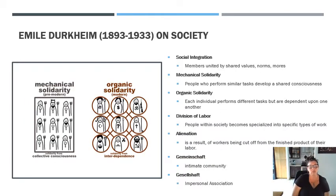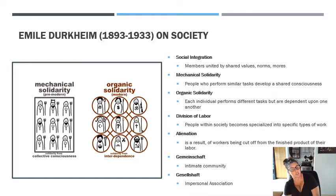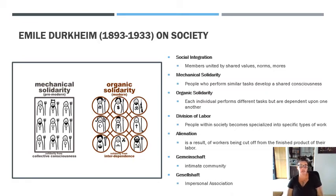Let's talk about how Emile Durkheim views society and some of his terminology. Emile Durkheim is macro-level sociology, associated with structural functionalism. Some of the terms we want to talk about today are: social integration, mechanical and organic solidarity, division of labor, alienation, and Gemeinschaft and Gesellschaft — which are German terms I'll explain shortly.